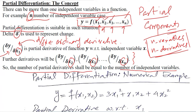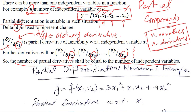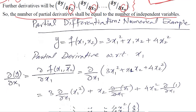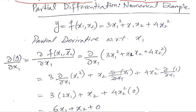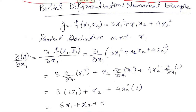Now we can understand it better if we take a numerical instance and solve it. Let us see how a numerical example can be done. This is partial differentiation and a numerical example of it. As you can see, y is now not dependent on just one independent variable, but two of them — x1 and x2.